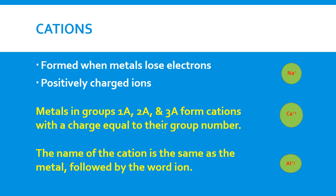So if you look at sodium on a periodic table, sodium is in group 1, it has a charge of plus 1 when it forms an ion. Calcium in group 2 will lose 2 electrons and has a charge of plus 2. Aluminum is in group 3, loses 3 electrons, has a charge of plus 3. We name the cation just as the element.